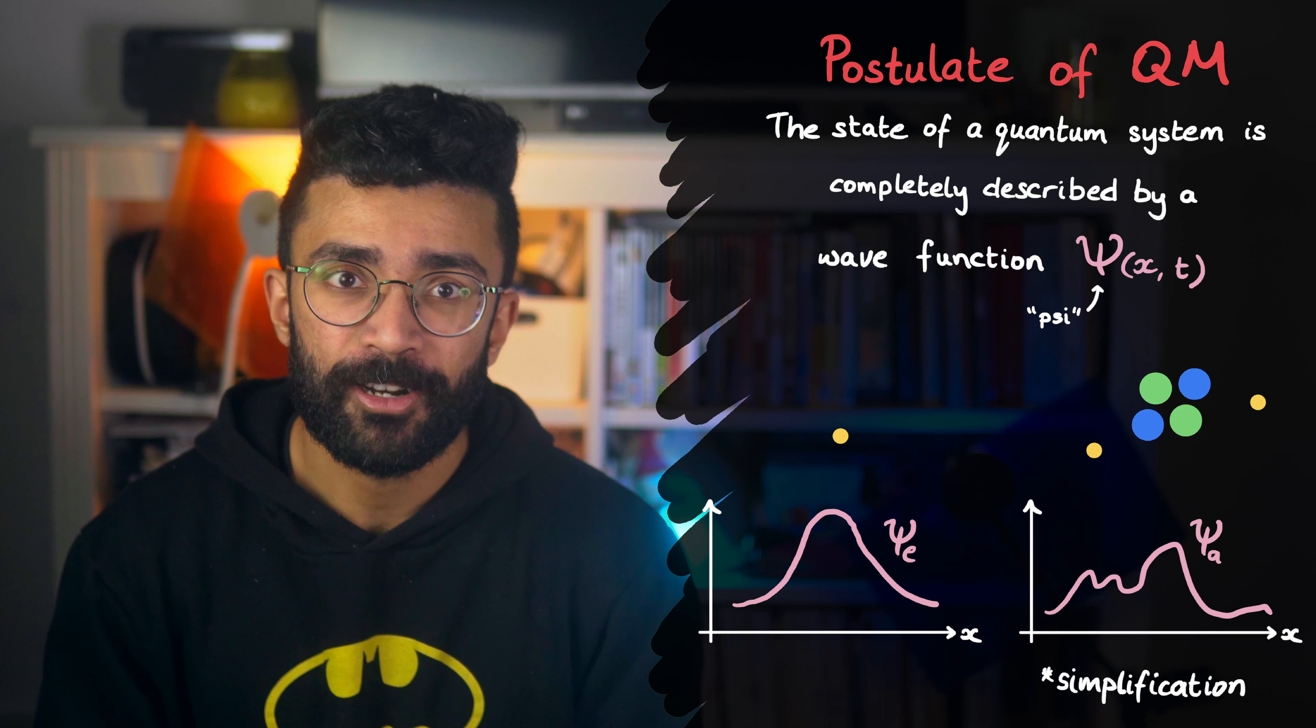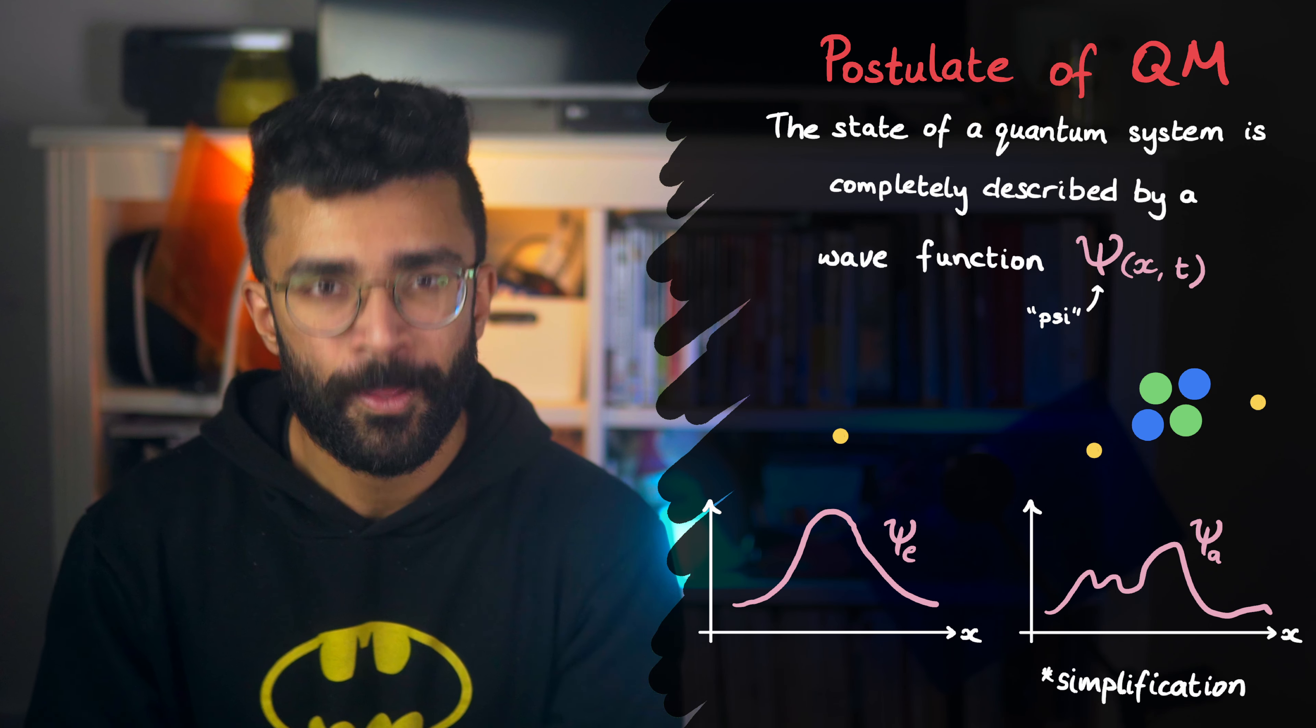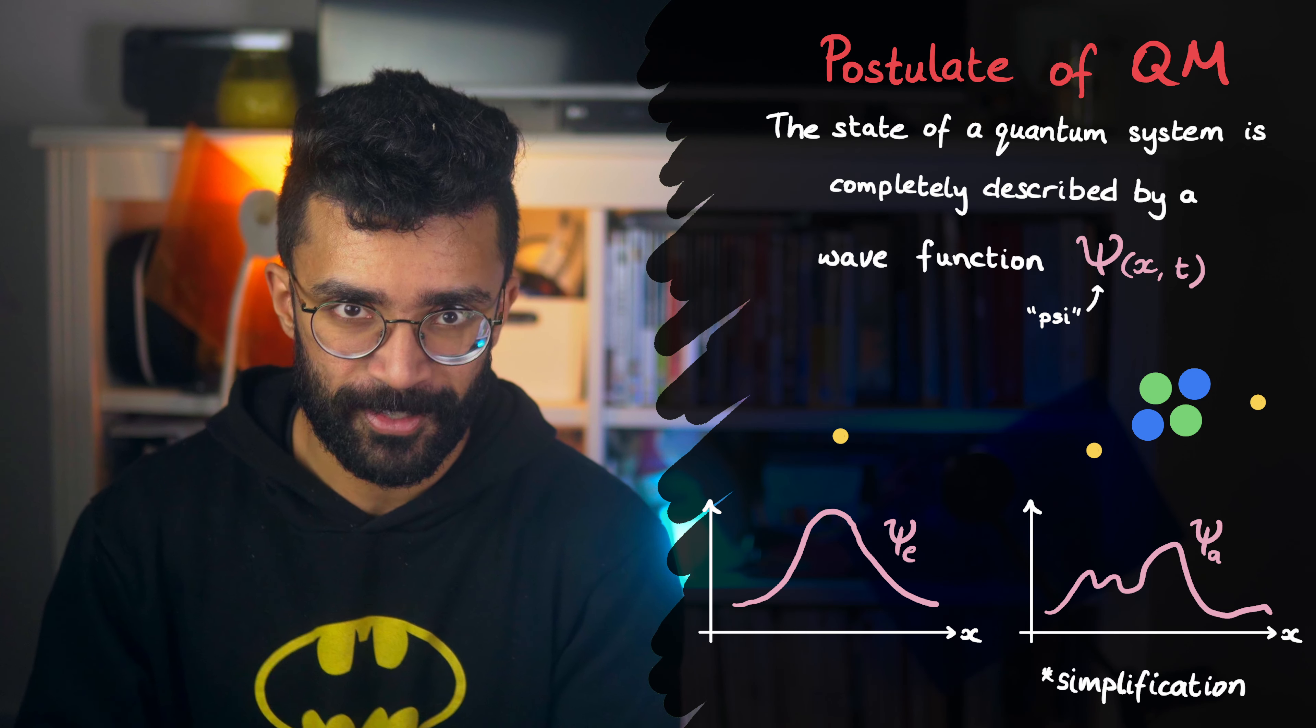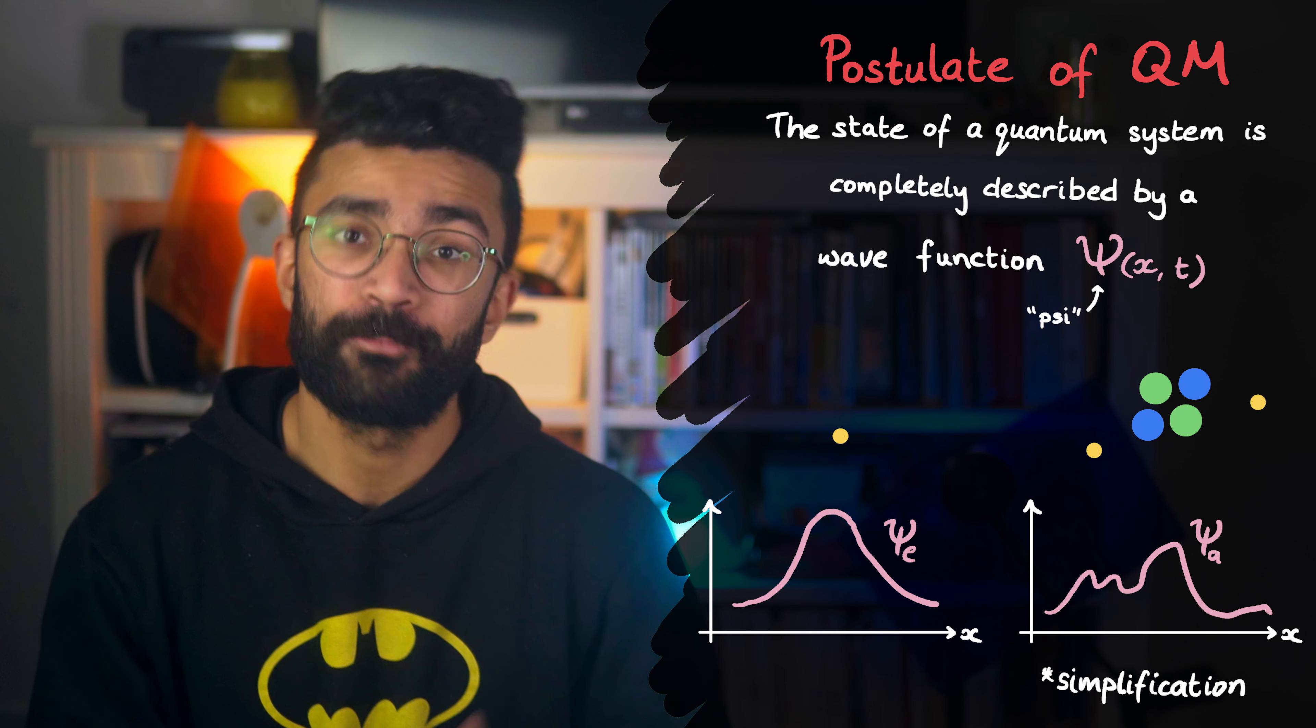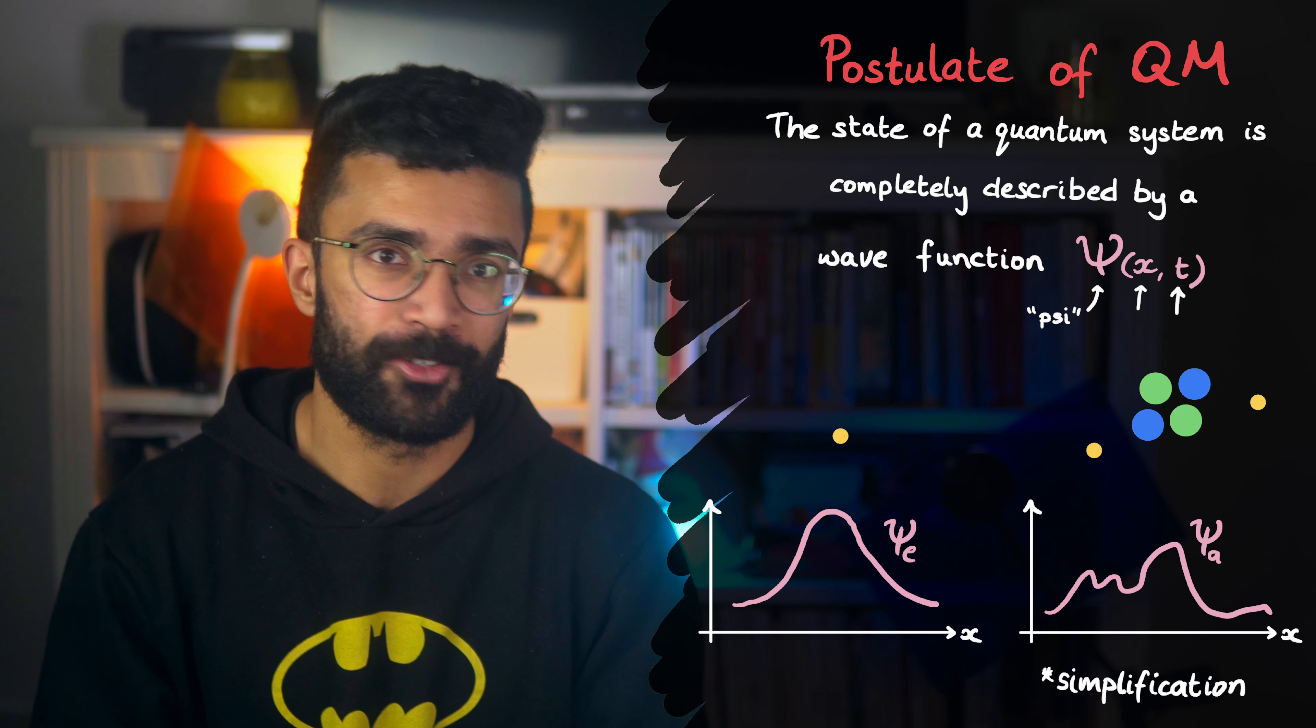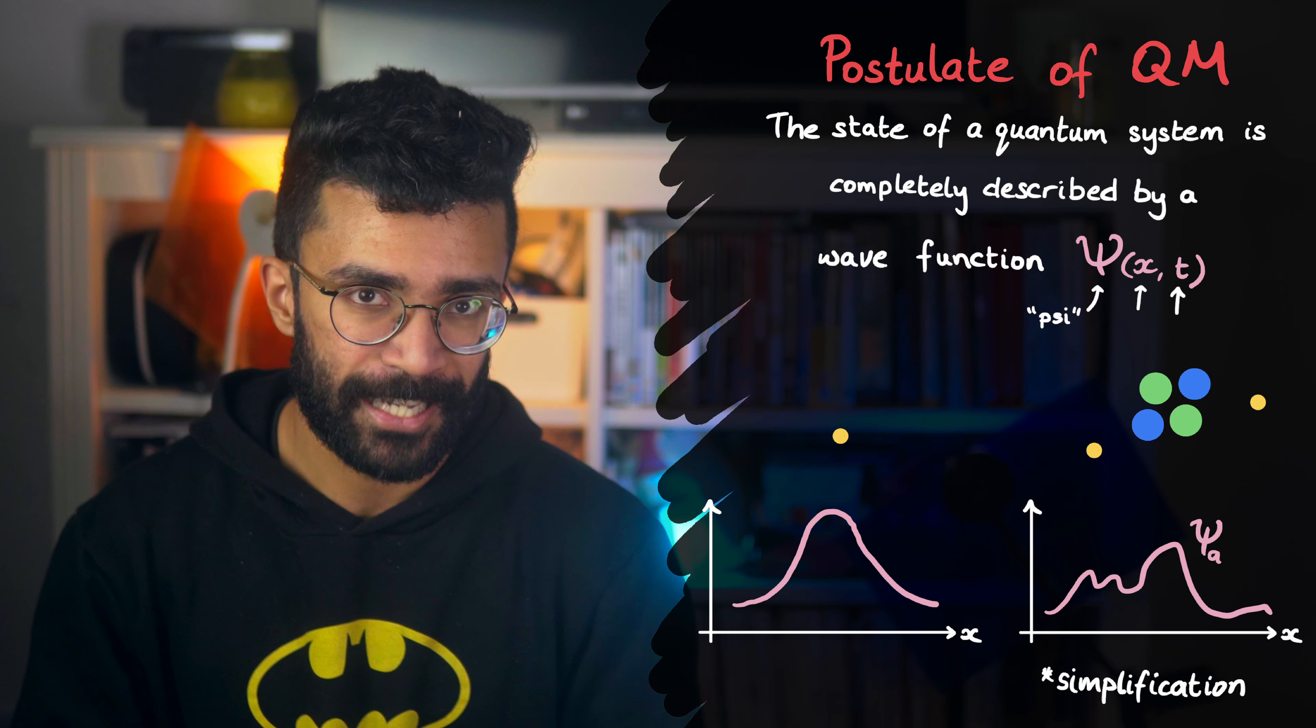ψ describes each system as a whole, rather than just individual particles, and ψ contains all the information we can know about our system. It also depends on position and time, so the exact value of the wave function depends on what region of space that we're considering, and what time we're looking at as well.